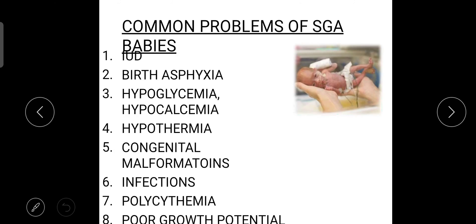Common problems of SGA babies: first one is intrauterine death, birth asphyxia, hypoglycemia, hypocalcemia, hypothermia, congenital malformation, infection, polycythemia, or poor growth potential. These are the commonly you can see with the baby with small gestational age.